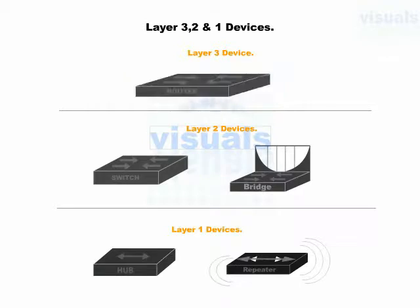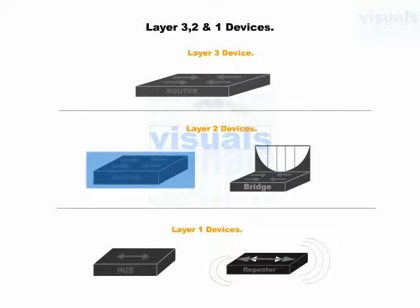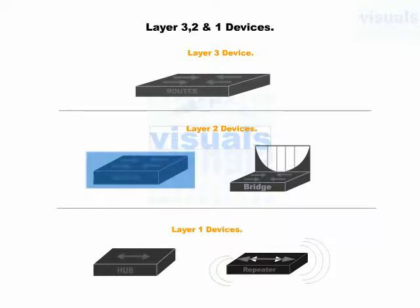Now let's move towards Layer 2 devices. We'll discuss switch first, then bridge. Switches are Layer 2 devices. A switch forwards frames between ports within the local area network. A switch filters frames based on MAC addresses. OSI model's Layer 2 deals with frames, which is why a switch is considered a Layer 2 device. A switch forwards broadcasts, which a router does not, and a Layer 2 switch is used within a local area network.